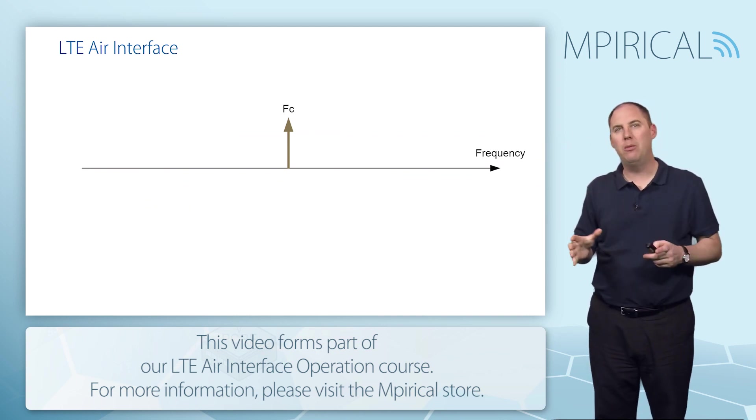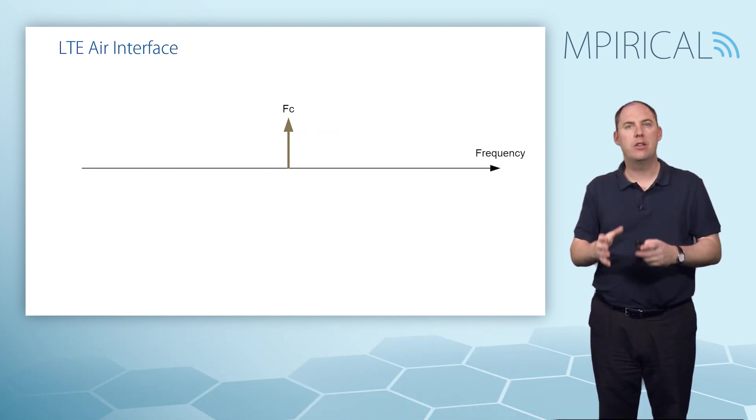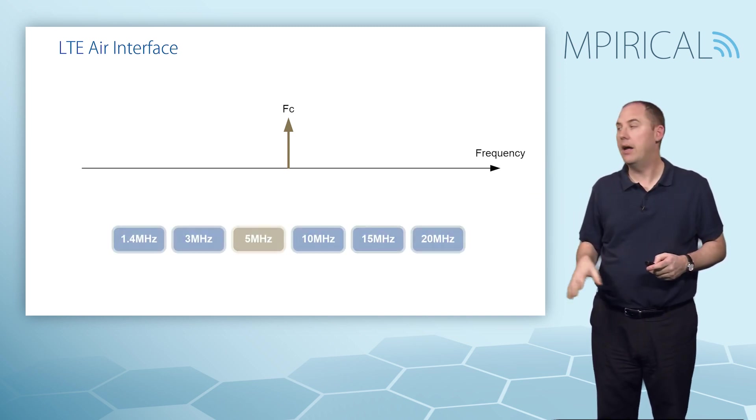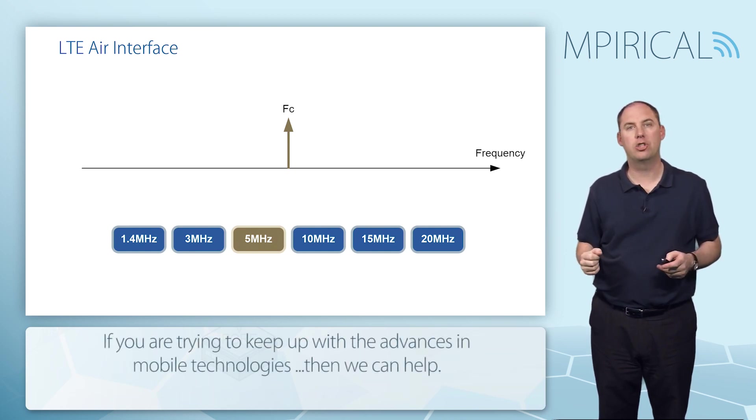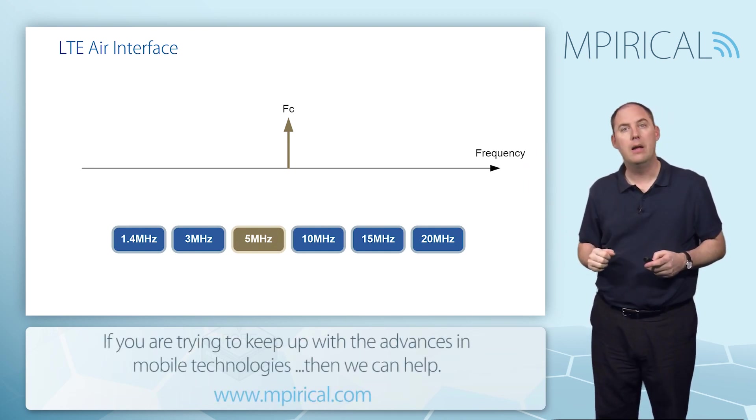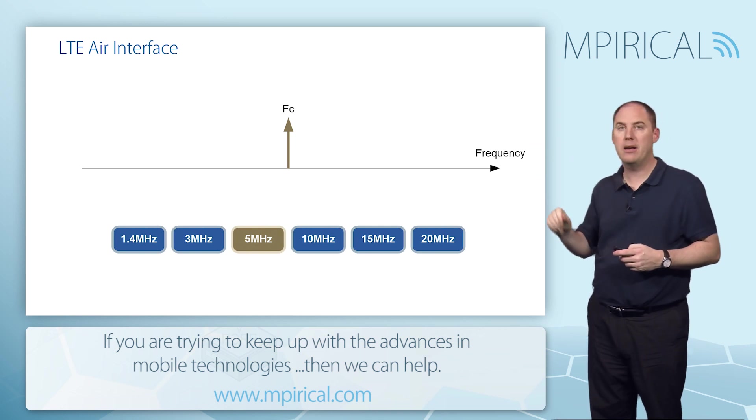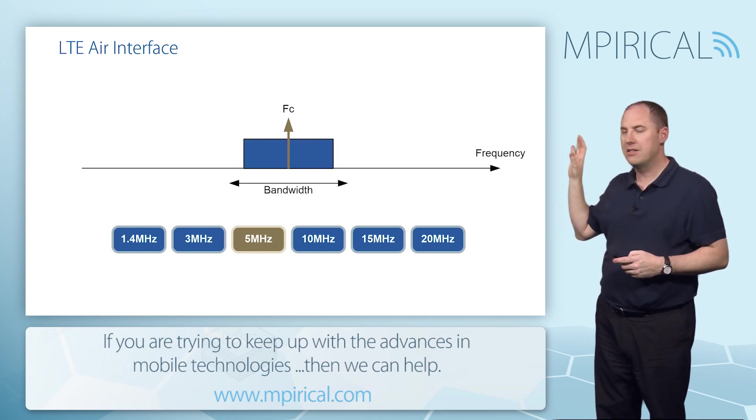When we start looking at the downlink, the first thing we need to think about is the LTE channel itself. We've got a center frequency here, and LTE will be deployed either on a 5, 10, 15, or 20 megahertz channel, or possibly something lower. If we just choose the 5 megahertz option, we'll find that has a certain bandwidth.